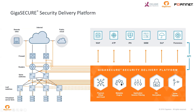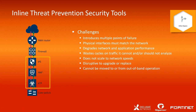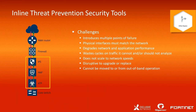Let's talk about inline bypass. The challenges with inline bypass include multiple points of failure, physical interfaces that need to match to connect the tools, degraded network and application performance, bottlenecks when any tool becomes slower than the others, lack of scalability, wasted CPU cycles on traffic tools cannot or should not be analyzing, and difficulty doing upgrades, POCs, or even maintenance. Tools placed inline cannot easily be moved to out-of-band operation, because any changes would mean disruption to the network.